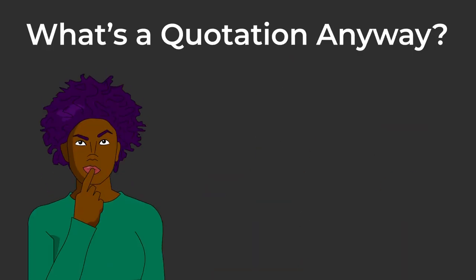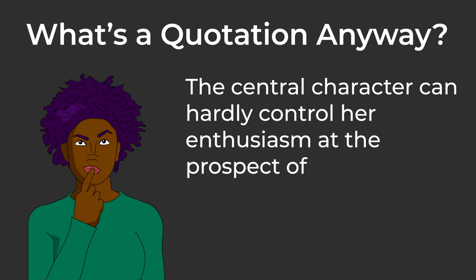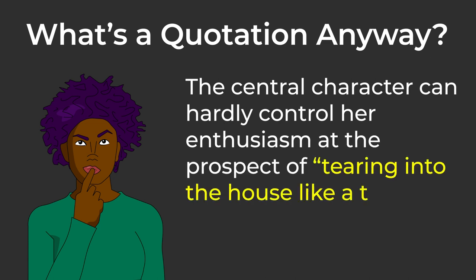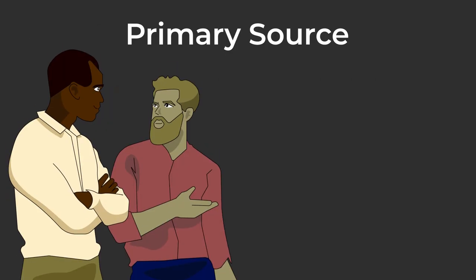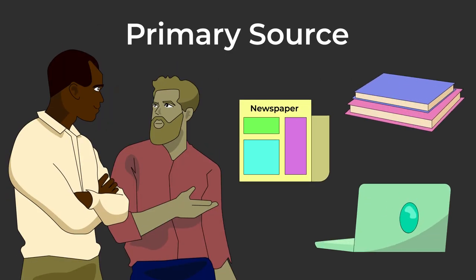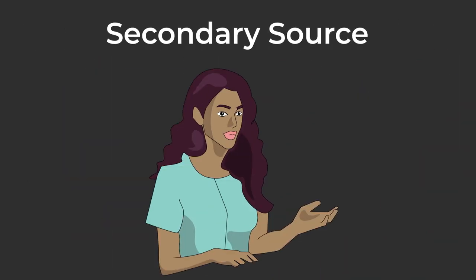What's a quotation anyway? A direct quotation can be as short as part of a line — such as, the central character can hardly control her enthusiasm at the prospect of "tearing into the house like a tornado on steroids" — to as long as a significant passage taken in its original form from the work you are using, whether it is the primary source, such as the person you interviewed, or the article, books, or story you're studying, or the secondary source: someone else's comments on that article, etc.